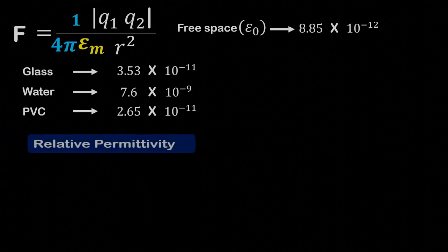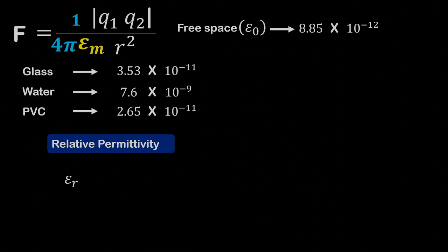So we use relative permittivity epsilon r instead. Relative permittivity of a medium is equal to the permittivity of a medium divided by the permittivity of free space.